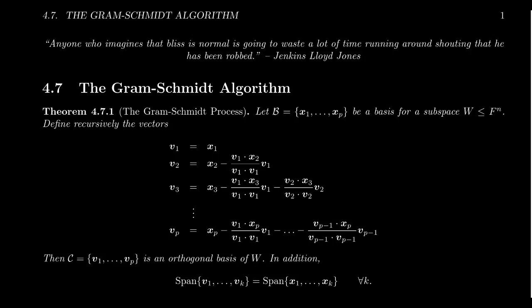Suppose we have already in hand a basis for our vector space W that sits inside of F^N. What we're going to do is recursively create a basis that's orthogonal in the following manner. Well, if that basis is empty, then we're already done — the empty basis is an orthogonal basis for the trivial subspace. But for a positive dimensional vector space, we already have the basis X1, X2 up to XP. We're not going to do anything to the first vector: V1, which is the new basis we're forming, we'll just take that to be X1, no change whatsoever.